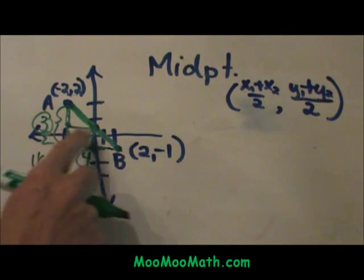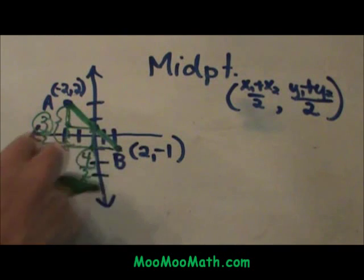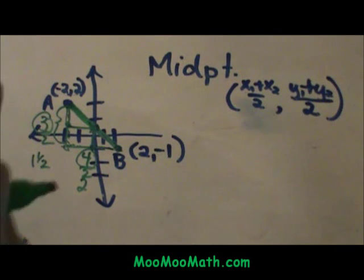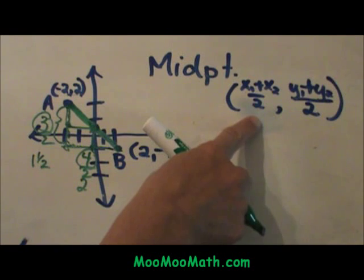There you go. So I have created a rectangle inside of this right triangle. That is the graphical way if you like graphs. Now let's look at the formula way.